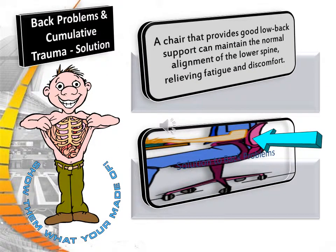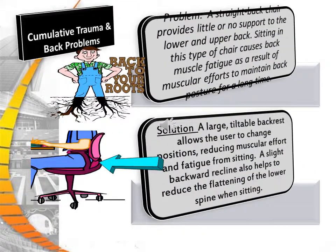A chair that provides good lower back support can maintain normal alignment of the lower spine, relieving fatigue and discomfort. A straight back chair provides little or no support to the lower and upper back, causing back muscle fatigue from sustained muscular effort. The solution is a large tiltable backrest which allows the user to change positions, reducing muscular effort and fatigue. A slight backward recline also helps to reduce the flattening of the lower spine when sitting.